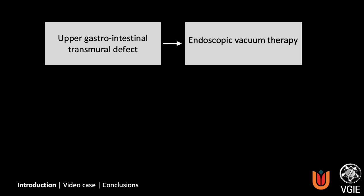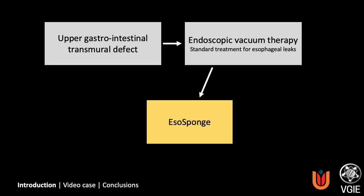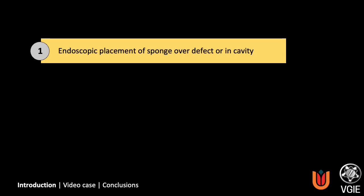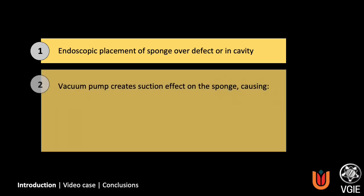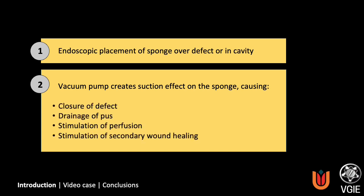For the management of upper gastrointestinal defects, endoscopic vacuum therapy is an efficient new treatment option. Since 2018, this has become standard treatment for esophageal leaks in our center using the iso sponge. For this treatment, first the sponge is placed over the defect or into the cavity. Second, the sponge is connected to a vacuum pump, creating a suction effect. This causes closure of the defect, drainage of pus, and a stimulation of perfusion and secondary wound healing.